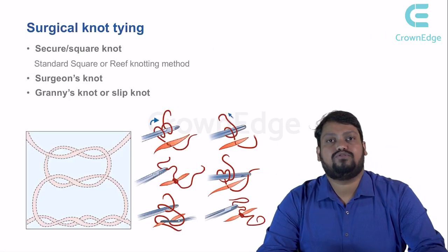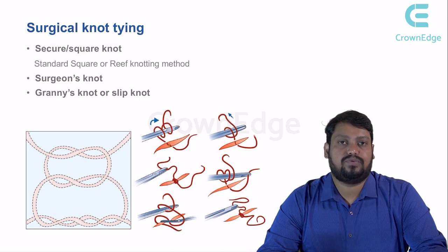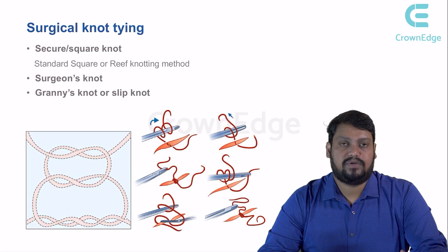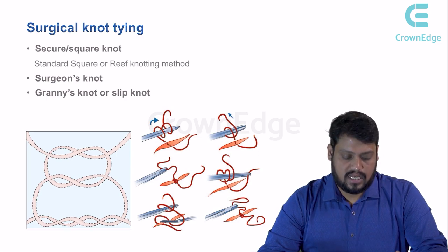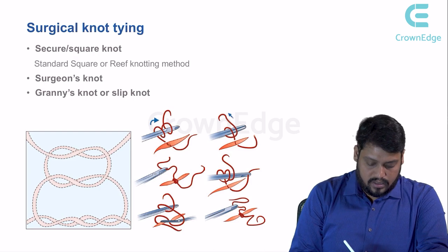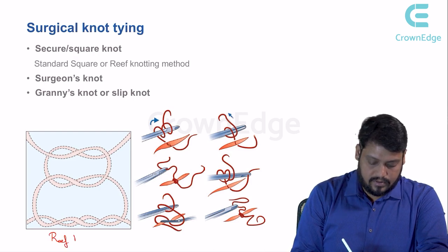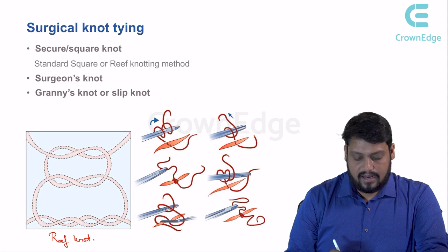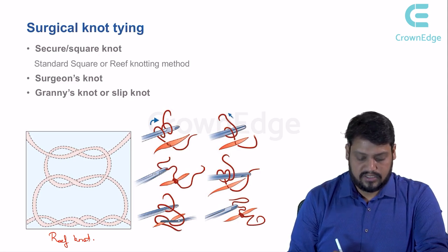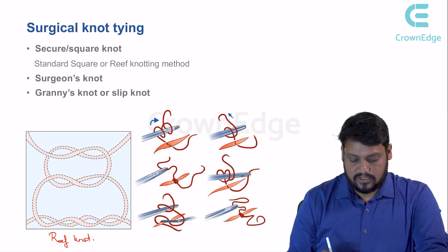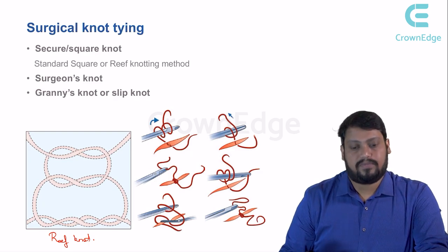Now let's look at types of surgical knots. There are three basic knots. The square or reef knot is a standard secure knot. The surgeon's knot is the most commonly used — it has a double throw followed by a single throw. The granny's knot or slip knot is the third type.